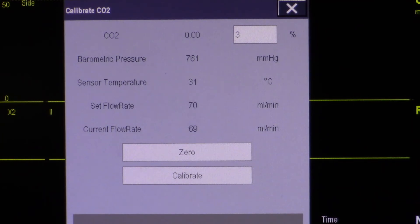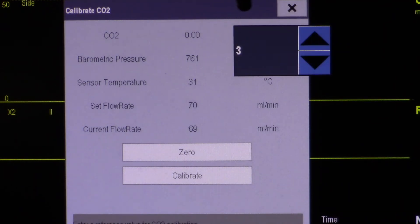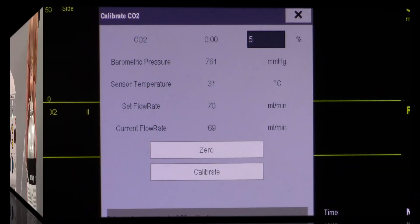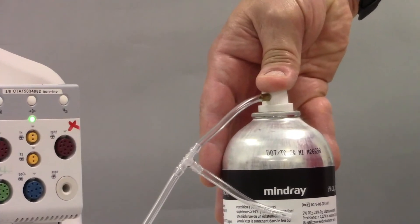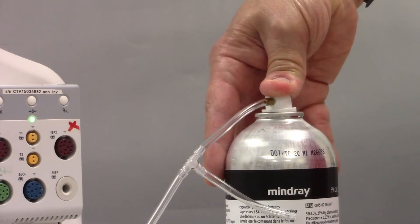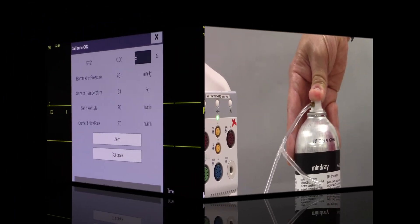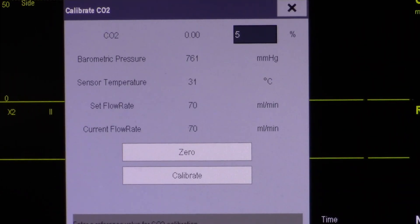The Mindray calibration gas is 5% CO2. To edit the field, touch your CO2 concentration window and select 5. Apply your calibration gas like so. Wait for your CO2 value to stabilize.